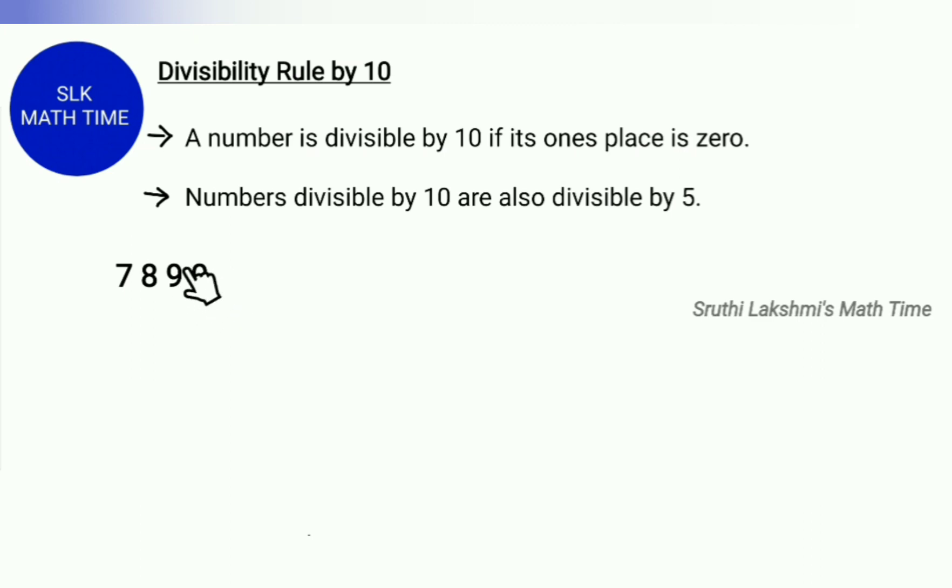Here we have a 0 in the ones place, so that means 7,890 is divisible by 10.